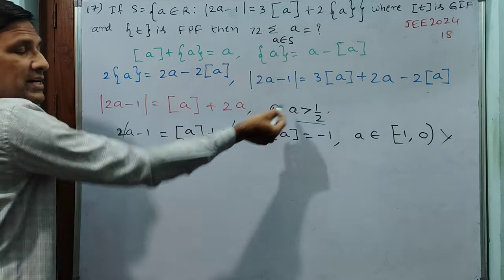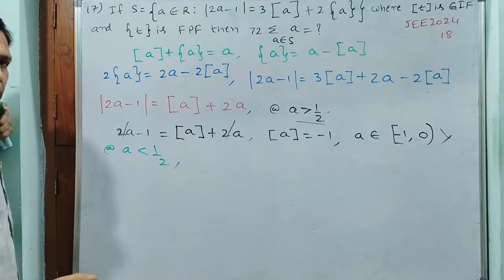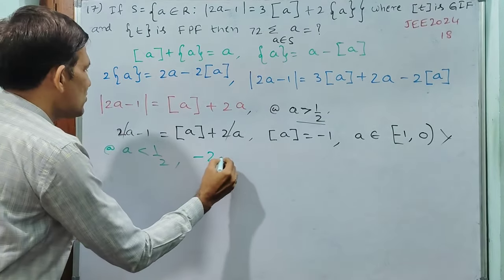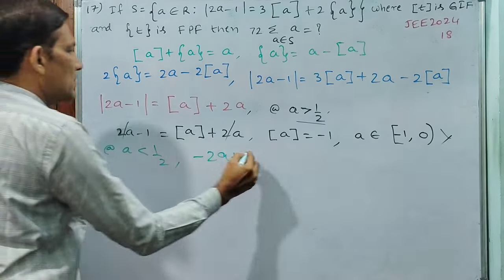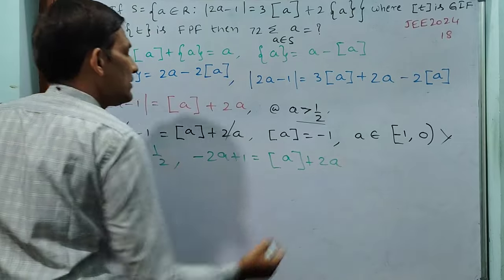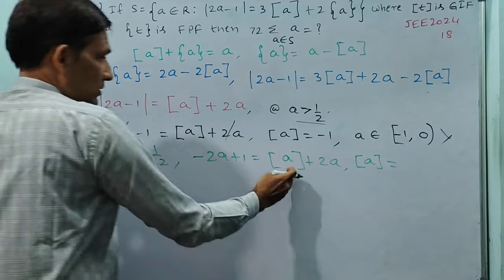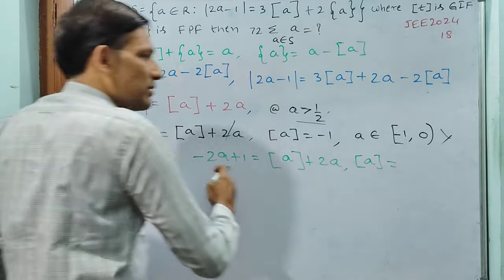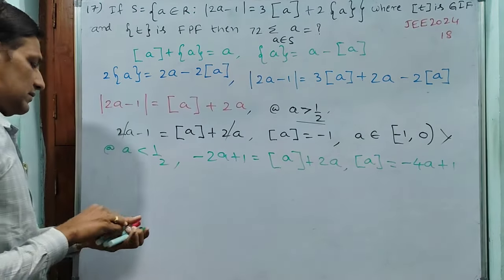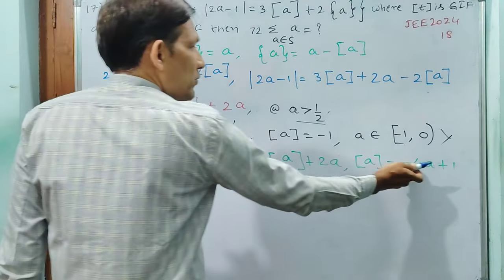Now go for the other case: a is less than 1/2. When a is less than 1/2, the expression 2a minus 1 is negative, so we take the negative: minus 2a plus 1 equals [a] plus 2a. Then [a] equals minus 4a plus 1.